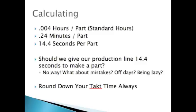Let's take those 0.004 hours, our standard hours, and multiply them by 60, because there's 60 minutes in an hour. So 0.004 hours per part is also 0.24 minutes per part. But even that's not super useful, because we don't talk about minutes like that. So multiply that by 60 again, because there's 60 seconds in a minute, and you get 14.4 seconds per part.